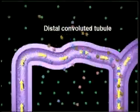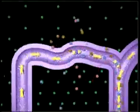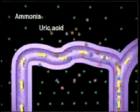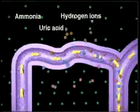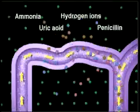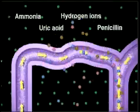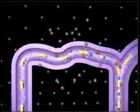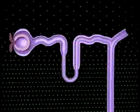Some wastes — ammonia, uric acid, hydrogen ions, penicillin — are secreted from blood vessels into the renal tubule.